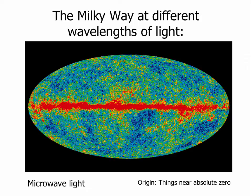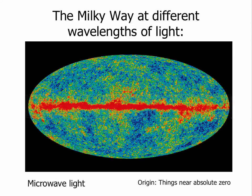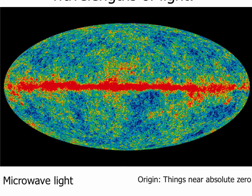Moving shorter into microwave light — changing color schemes again — red means a lot of microwaves, blue means very few. You still see the Milky Way across the middle with lots of microwaves coming from there. Microwaves originate from objects near absolute zero in temperature, so the band across the middle contains the coldest material in our galaxy. The microwaves from outside the Milky Way band are actually coming from the Big Bang. The universe has cooled to just three degrees above absolute zero, and that patchy spotty stuff above and below the Milky Way is the most distant light we can see — coming from the very edge of the observable universe.